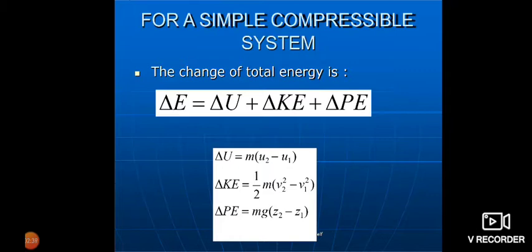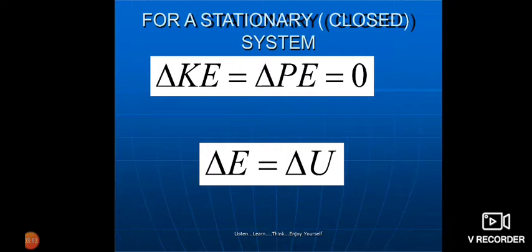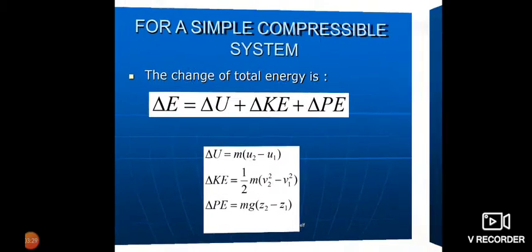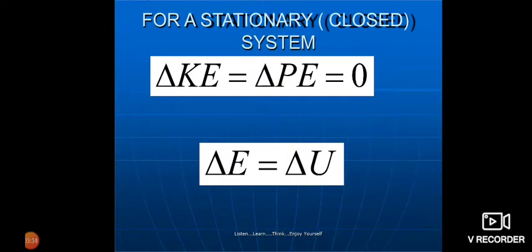The change in internal energy is given by m(u2 − u1), where u2 is the final state and u1 is the initial state of internal energy. For kinetic energy, it is one-half m·v². For potential energy, it is mg(z2 − z1), where z is the datum height from which the object falls to the ground. For a stationary closed system, the change in total energy equals the change in internal energy.